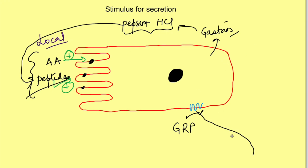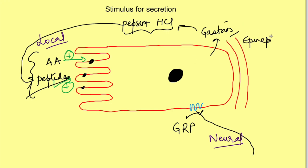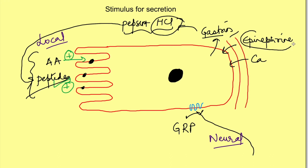There are local stimuli, neural stimuli, and certain stimuli from blood as well. This basal portion of the G cell, near to the blood vessel, is where epinephrine — released from sympathetic neurons — and calcium can act on the G cells and cause release of gastrin. Since gastrin is important for HCl secretion, when there is a lot of stress and sympathetic activation, epinephrine stimulates gastrin and HCl secretion. So stress can lead to increased acid secretion in the stomach.